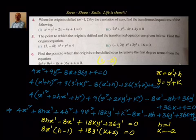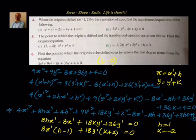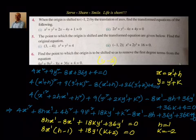That's briefly about translation of axis. In the next session we will see about rotation of axis. To summarize: if a point has coordinates (x, y) when the origin is at (0, 0), and the origin is shifted to (h, k), then the new coordinates (x-dash, y-dash) of the same point are related by x = x-dash + h and y = y-dash + k. I'll catch you again in the next session with rotation of axis. Till then, keep smiling and sharing.